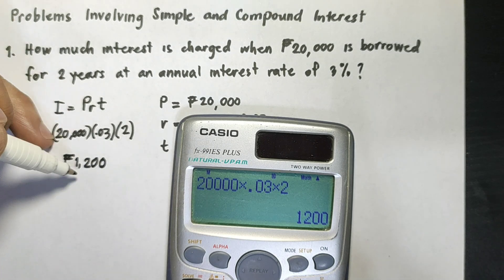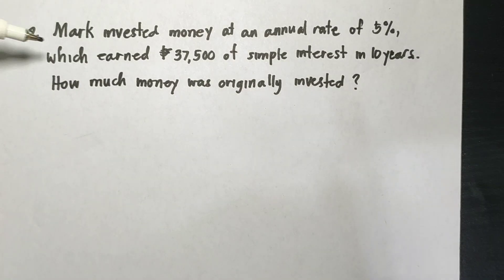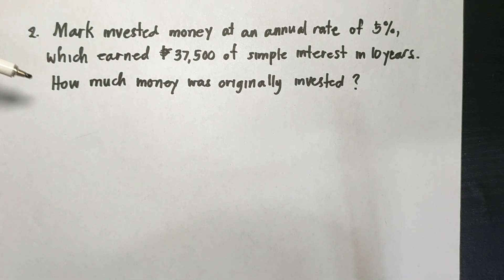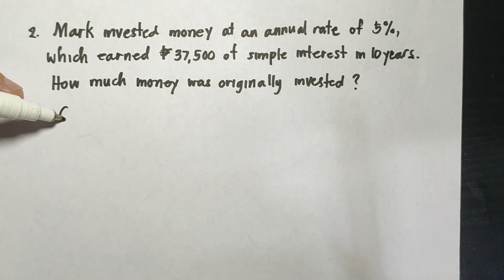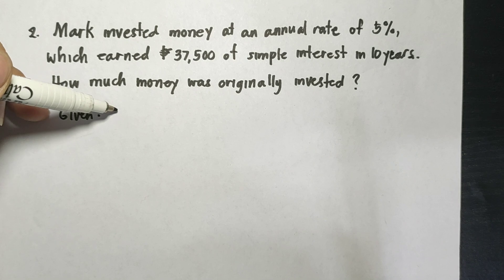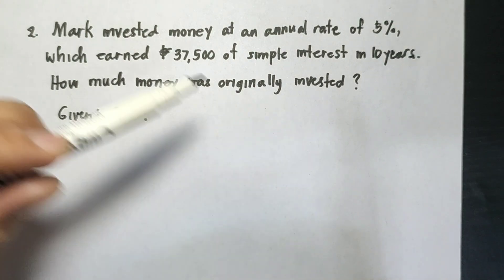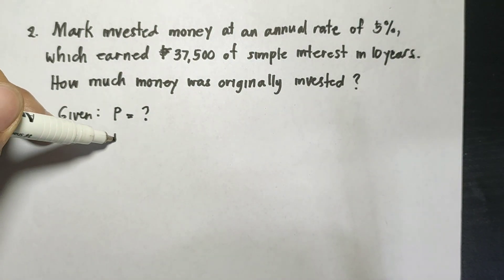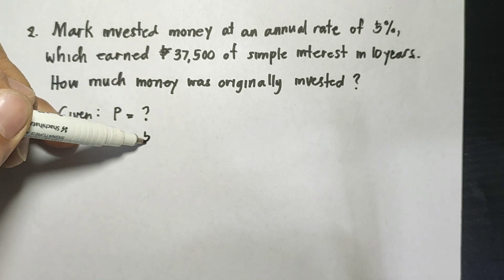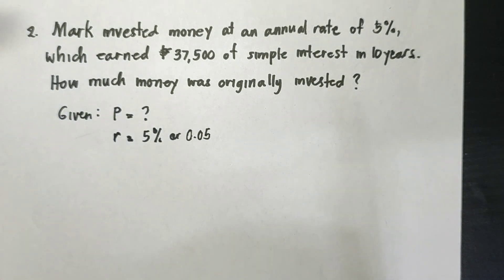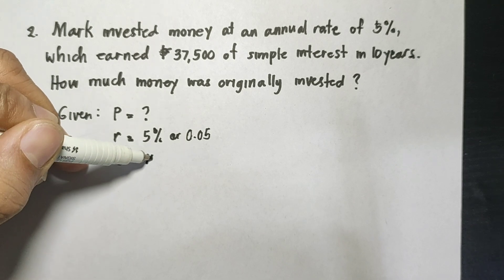Example number two: Mark invested money at an annual rate of 5%, which earned 37,500 pesos of simple interest in 10 years. How much money was originally invested? We are trying to find the principal amount. The rate of interest is 5% or 0.05, and the time is 10 years.